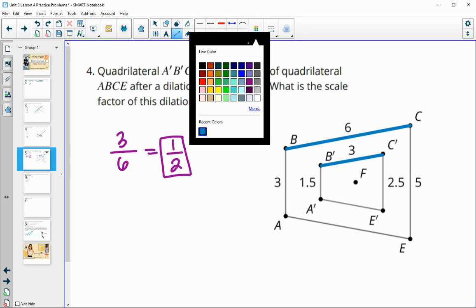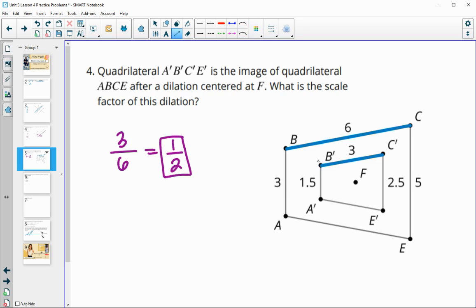And you could certainly have done other sides. So you could have compared A prime, B prime to AB and done 1.5 divided by three, or 2.5 divided by five would have gotten you the same scale factor.